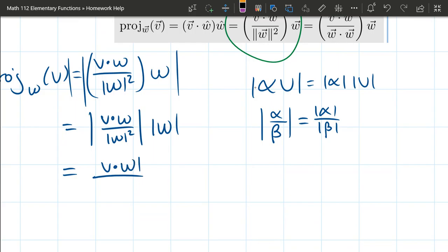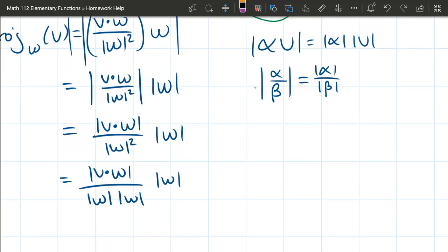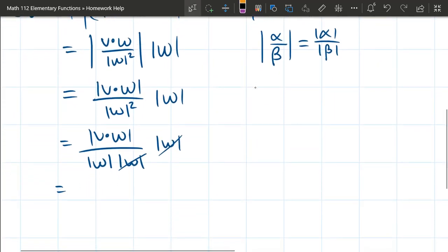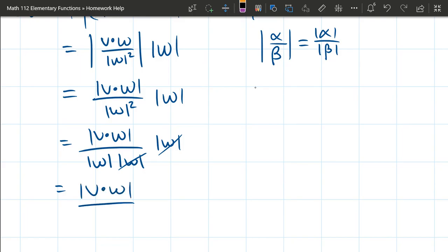So we got v dot w absolute value divided by magnitude w squared. You don't need the extra absolute value here because magnitude is already positive. It's also being squared, so it's positive. So I'm going to go ahead and erase those two times magnitude w. So we got magnitude w squared. So I'm going to write that as magnitude w times magnitude w. And that's in the denominator and copy down the other magnitude w. So now we're looking at all numbers here, cancel, cancel. And we just have v dot w divided by magnitude w.